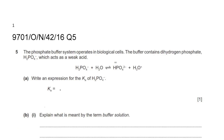So let's start by solving question 5 from year 2016, variant 4-2, October-November. In this question, they mention that the phosphate buffer system operates in biological cells. The buffer system contains dihydrogen phosphate, H2PO4- ion, which acts as a weak acid. They've already provided us with the equilibrium reaction, and now they want us to write down the acid dissociation constant expression for the weak acid.